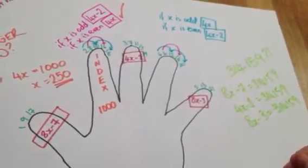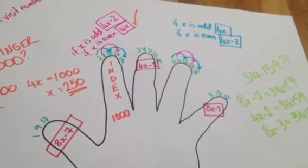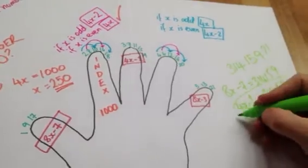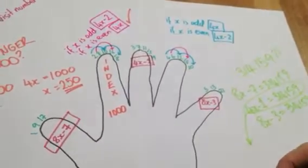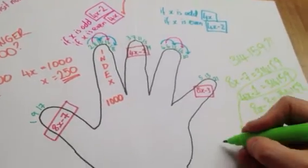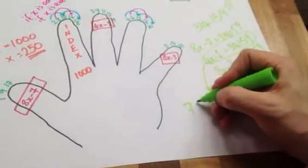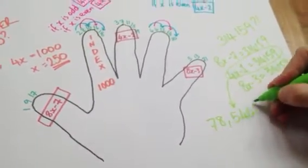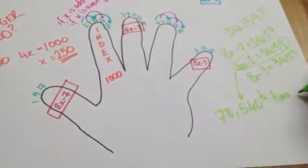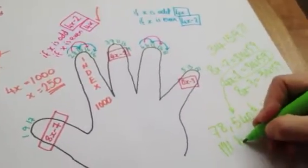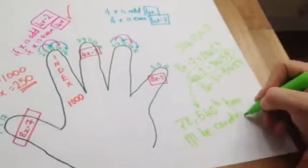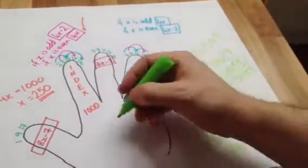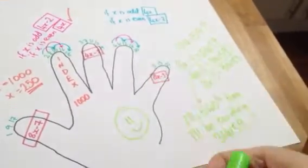You only get one possible solution for that, and that's for this one here. And if you solve it, you find that if I get to that middle finger for the 78,540th time, I'll be counting 314159. Hope that helps, folks.